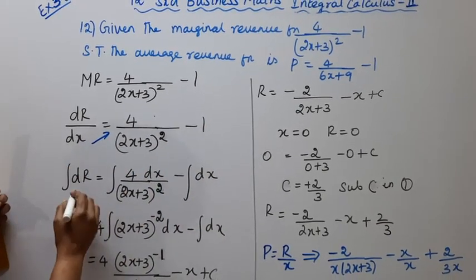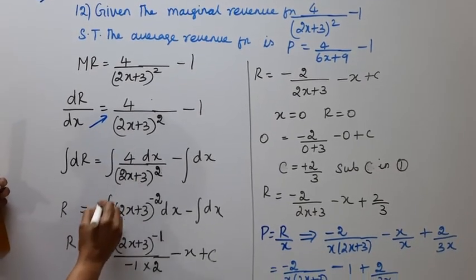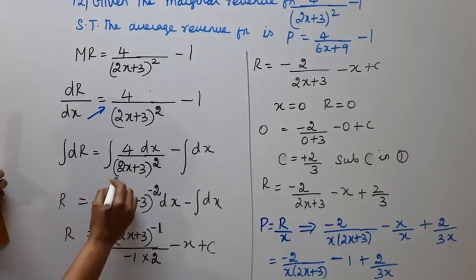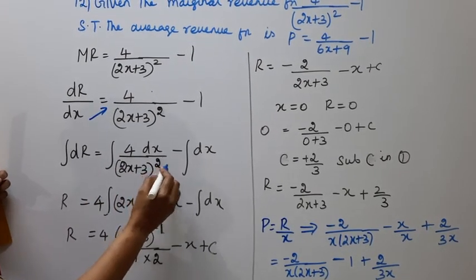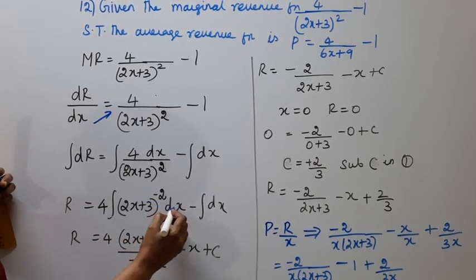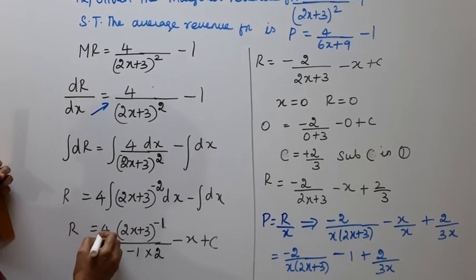When we integrate dR, we get R equal to 4 times the integration of (2x+3)^-2 dx minus the integration of dx.